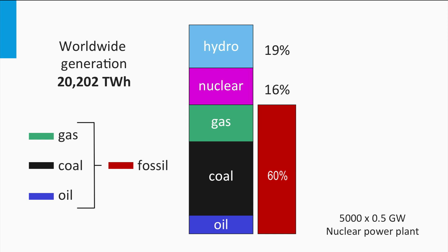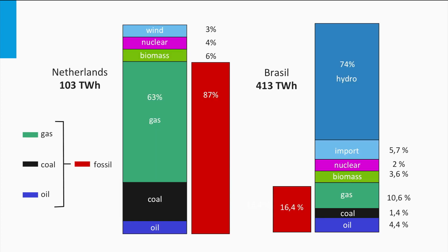In 2007, 20,200 TWh of electricity was generated worldwide. Considering a 0.5 GW nuclear power plant, we would need around 5,000 nuclear plants if electricity needs were fully covered by nuclear power. Sources for electricity generation differ by country — for example, the Netherlands heavily depends on local gas resources, whereas in Brazil, hydroelectricity is the most important resource.